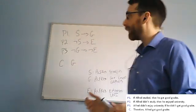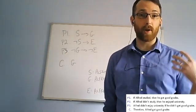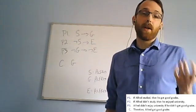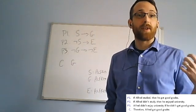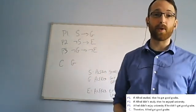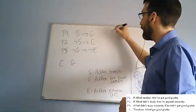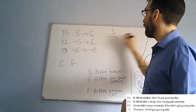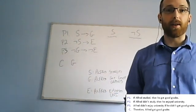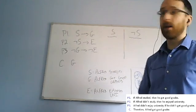Here's a way of going about it. I might say, all of these premises are conditional. None of them tell me directly whether Alfred studied or not, whether he got good grades or not, whether he enjoyed university or not. But I can say this: without even looking at the premises, I know that either Alfred studied or he didn't. Either sentence S is true or it's false. It's not going to be both. It's not going to be neither. We're in one case or the other. Let me write those out. So either he studied, that's one possibility, or he didn't study. If I'm saying S is either true or false, that's the same as saying either S is true or not S is true.